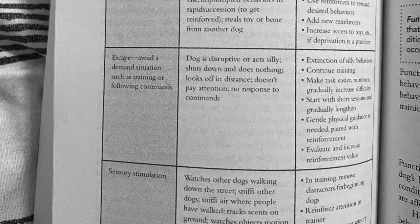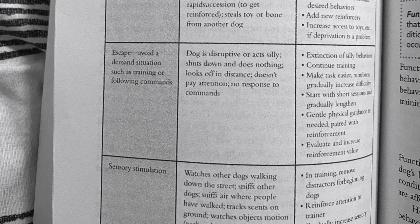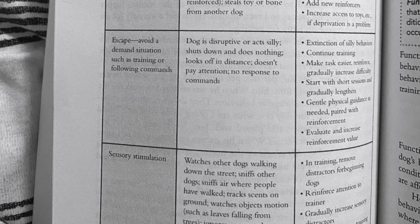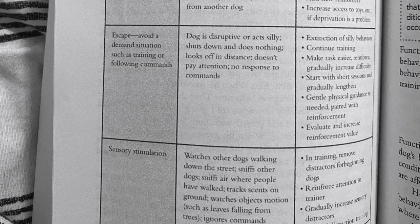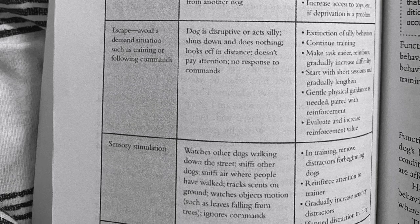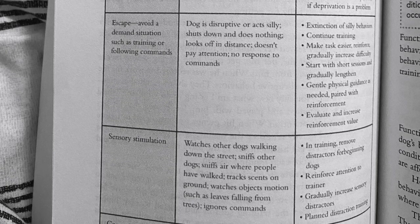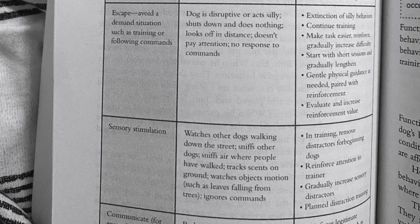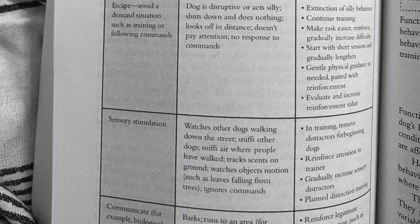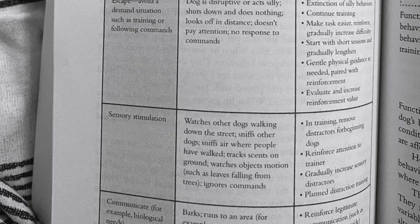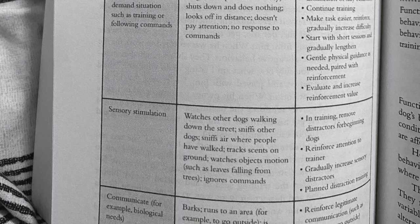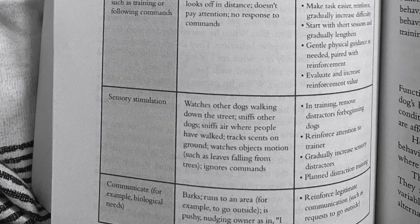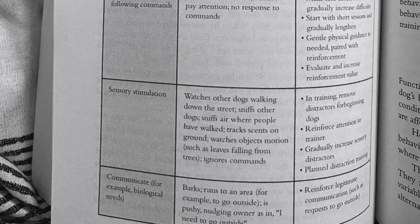Sensory stimulation: dog watches other dogs walking down the street, sniffs other dogs, sniffs air where people have walked, tracks scents on the ground, watches objects in motion such as leaves falling from trees, and ignores commands. In training, remove distractors for beginning dogs, reinforce attention to trainer, gradually increase sensory distractors, and plan distracting training sessions. Communicate biological needs: dog runs to an area to go outside, or is pushy and nudges owner as in 'I need to go outside.' Reinforce legitimate communication such as a request to go outside.